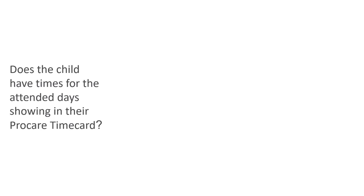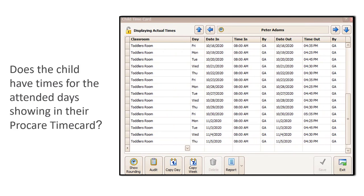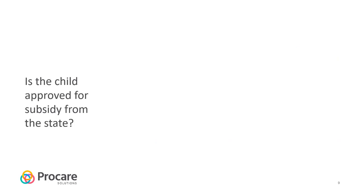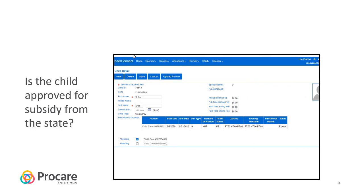To check attendance completeness, navigate to the child's time card in ProCare and confirm there are completed in-and-out times for that child. An incomplete punch on one day will not allow for subsequent time entries. To confirm subsidy approval, check the KinderConnect website under the child's details and verify the child has a valid start and end date for the submitted period and that their status is active.